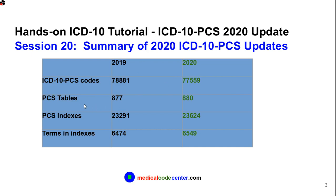For PCS tables, in 2019 we had 877 tables, but in 2020 we will have 3 more PCS tables. For PCS indexes, we have a lot more entries — 333 more PCS index entries. And in terms of index terms, we have 75 more terms than last year.